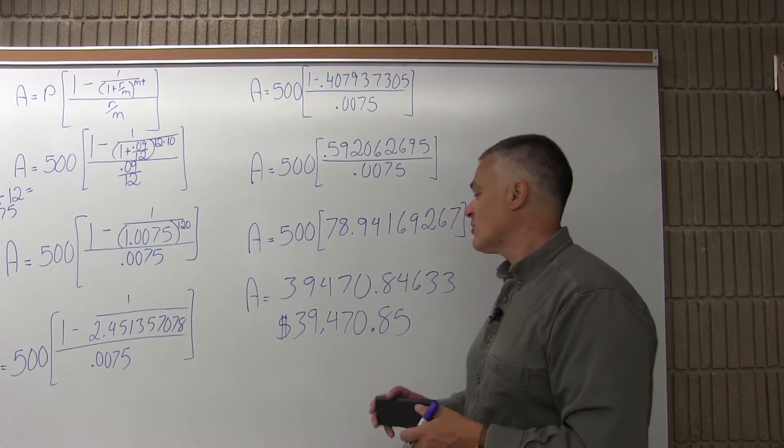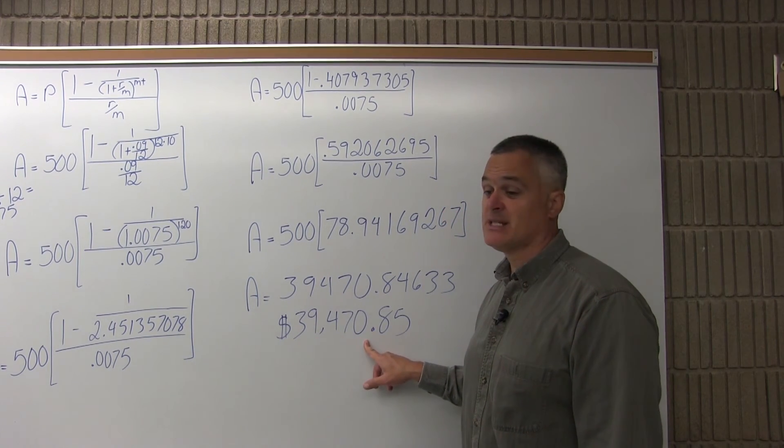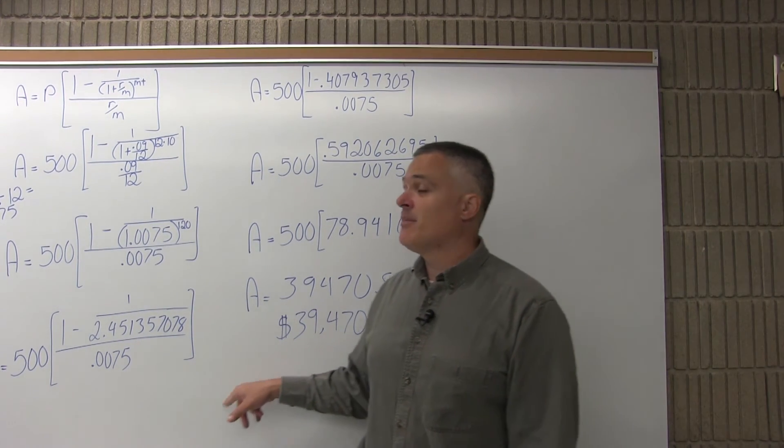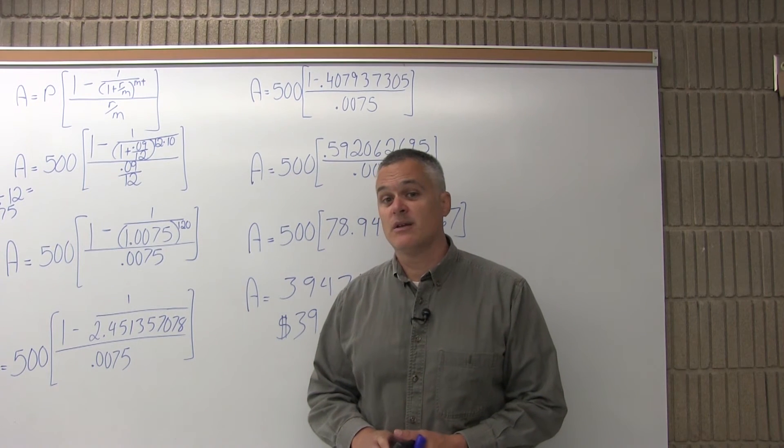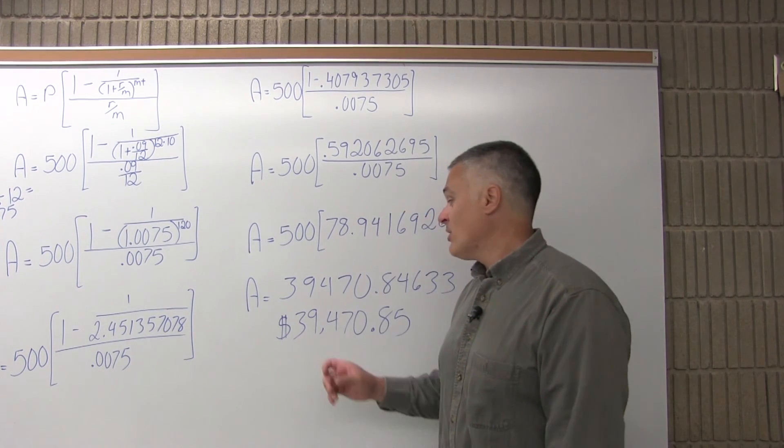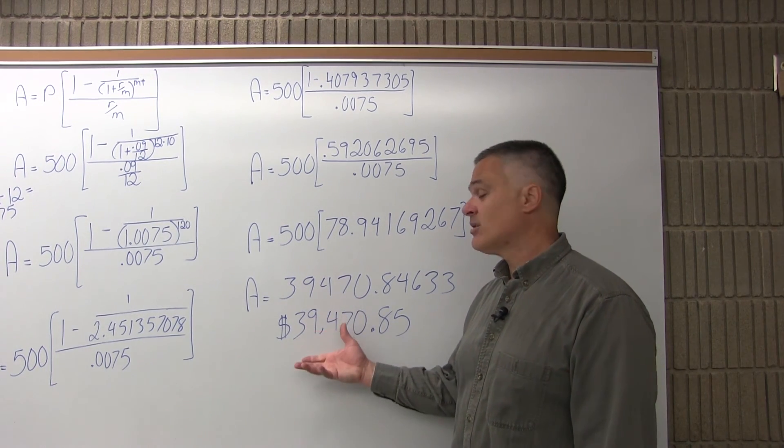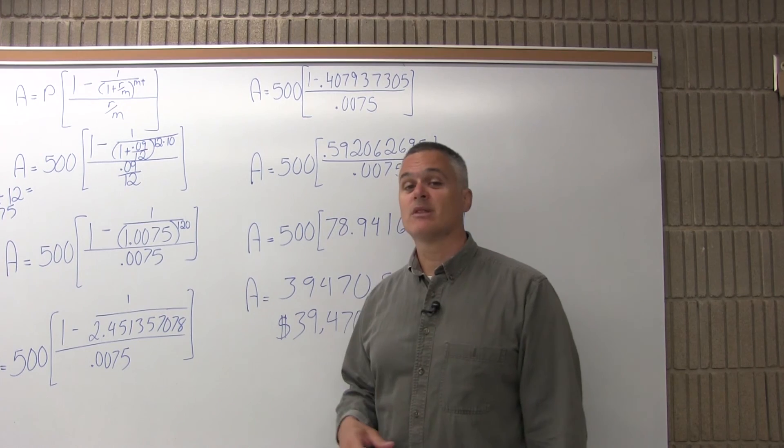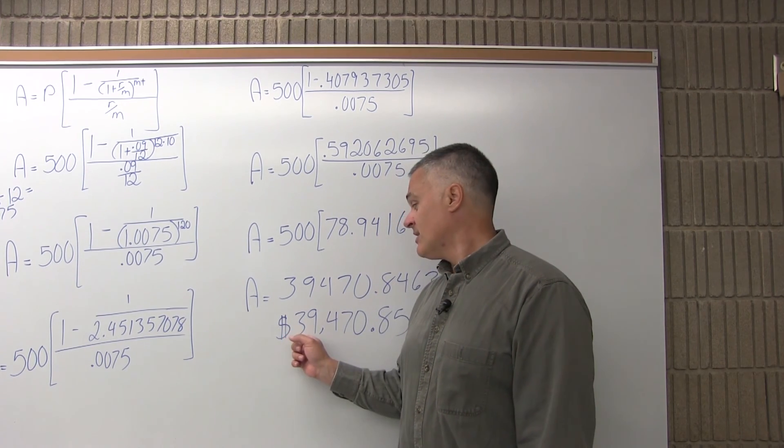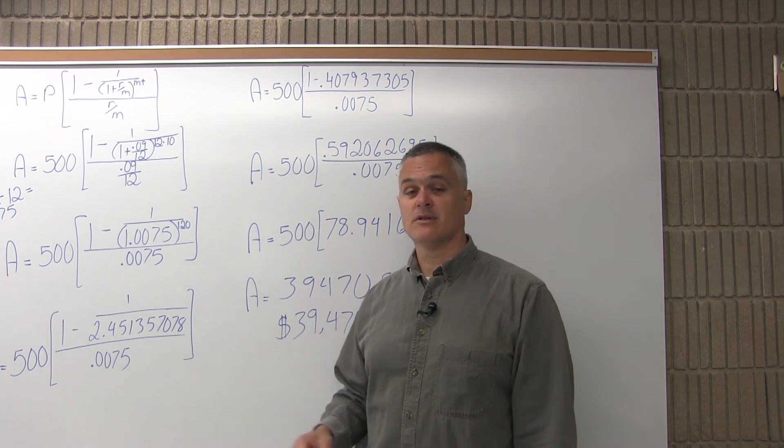Now again, think of what this means. If Krusty the Clown invests this $39,470.85 now, he'll be able to pay Bart $500 a month over a 10-year period. So he's going to pay Bart $60,000 by only having $39,470 available now. So he's going to save a little over $20,000 by having the money up front. The interest that this earns while the $500 a month payments are coming out is what makes up the difference.